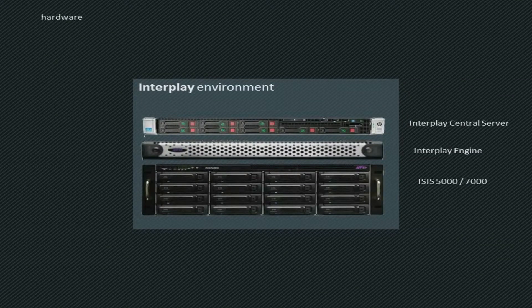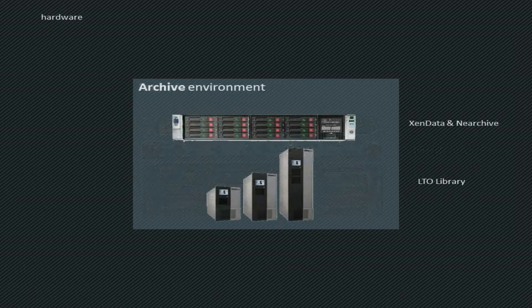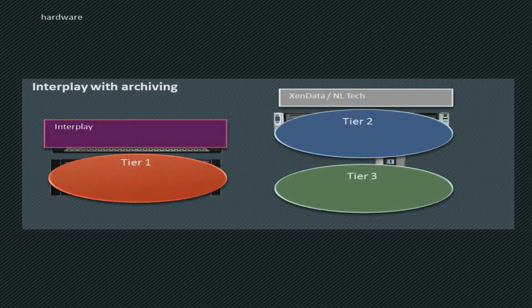Let's look at the hardware. Downstairs we've got our ICES 5000, which is our storage, an Interplay engine, and the Interplay central server. On the archive side we've got our Zendata server with internal storage forming the tier 2 storage, and our tape library managed within the Zendata infrastructure — it's agnostic to tape library, so it doesn't have to be Spectralogic. Tier 1 is our expensive ICES production real-time playback storage, tier 2 is Zendata's lower-grade, more cost-effective disk, and tier 3 is the LTO library.